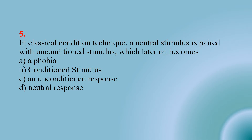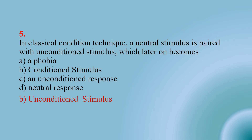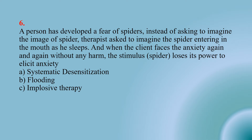Number five: In classical conditioning, a neutral stimulus is paired with an unconditioned stimulus, which later on becomes — Option A: a phobia; Option B: a conditioned stimulus; Option C: an unconditioned response; Option D: a neutral response. The right option is B — conditioned stimulus.